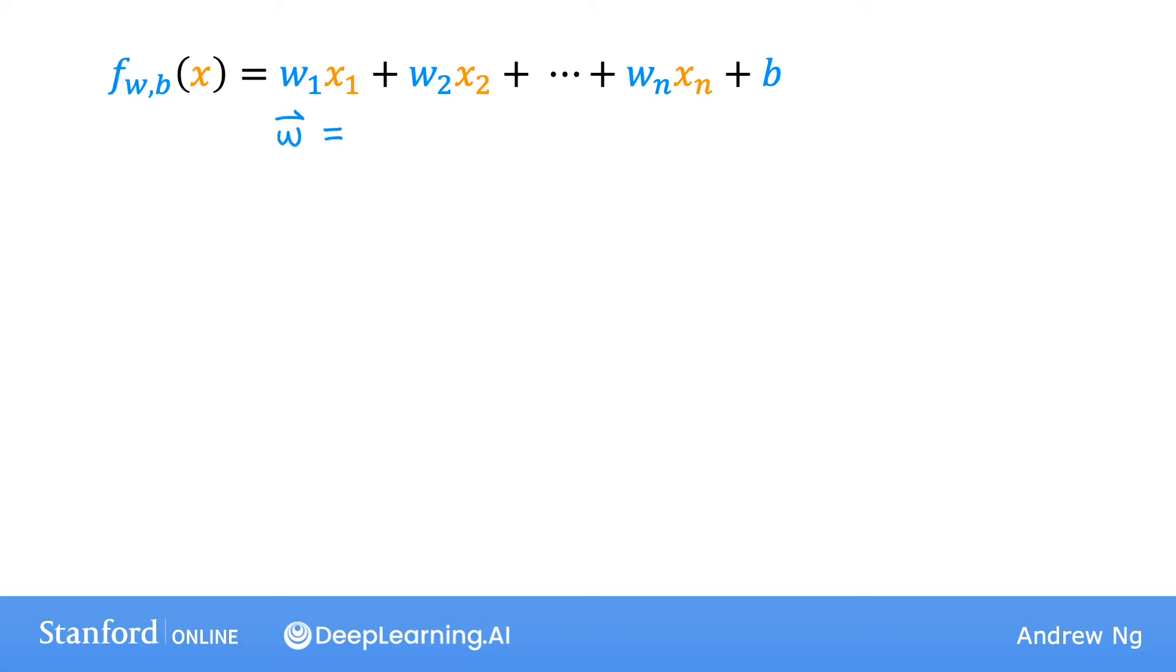Let's define w as a list of numbers that lists the parameters w1, w2, w3, all the way through wn. In mathematics, this is called a vector. And sometimes to designate that this is a vector, which just means a list of numbers, I'm going to draw a little arrow on top. You don't always have to draw this arrow, and you can do so or not in your own notation. So you can think of this little arrow as just an optional signifier to remind us that this is a vector. If you've taken a linear algebra class before, you might recognize that this is a row vector as opposed to a column vector. But if you don't know what those terms mean, you don't need to worry about it. Next, same as before, b is a single number and not a vector. And so this vector w together with this number b are the parameters of the model.